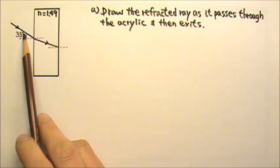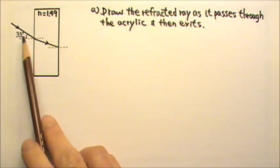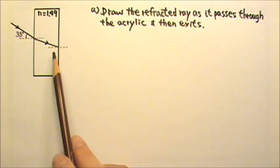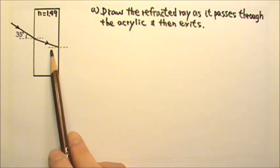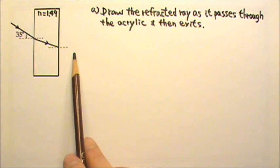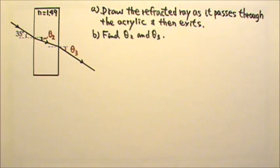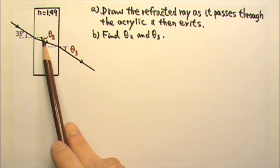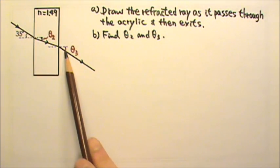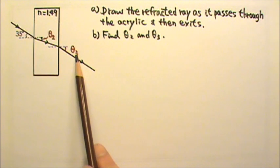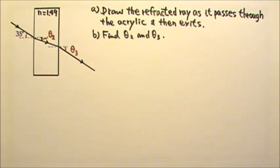When light goes from air to acrylic, it slows down so the angle gets smaller. And then the light goes from acrylic to air, it will speed up so the angle should get bigger. The angle of refraction over here is theta 2. The angle of refraction over here is theta 3. Find those two angles.